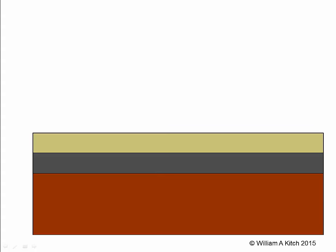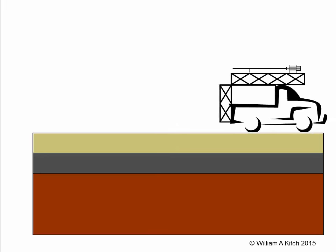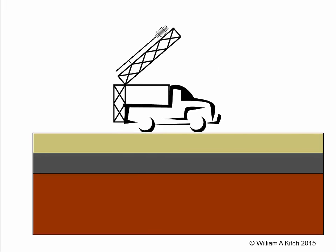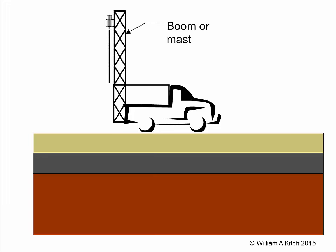The process of drilling is similar regardless of the type of drill rig used. First, we position the rig over the location where we wish to drill. Then we erect the drilling boom or mast and make sure it's vertical. A drill head mounted on the boom is the mechanism used to perform the drilling and sampling operation. The drill head provides two motions to aid in drilling: a torque can be applied to rotate the bit, and a vertical thrust can be applied to raise and lower drill bits and other equipment.